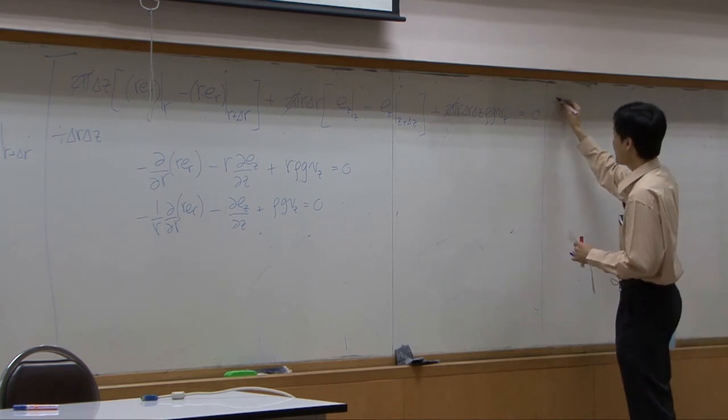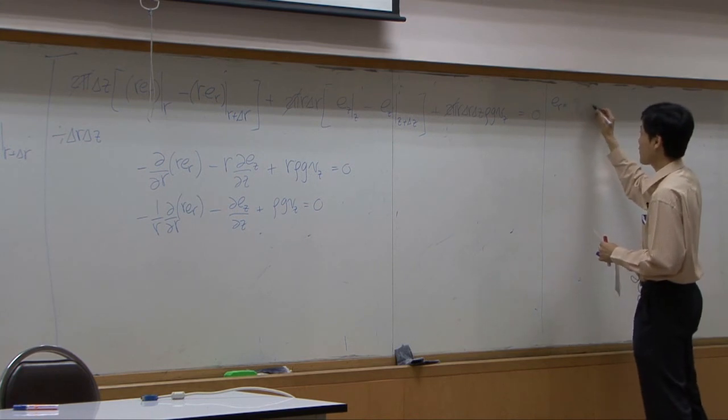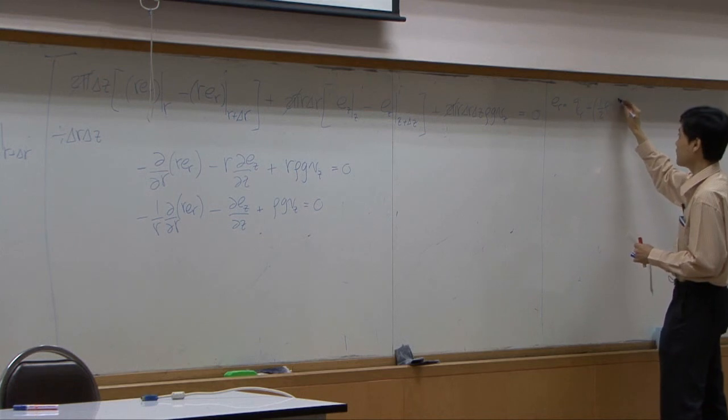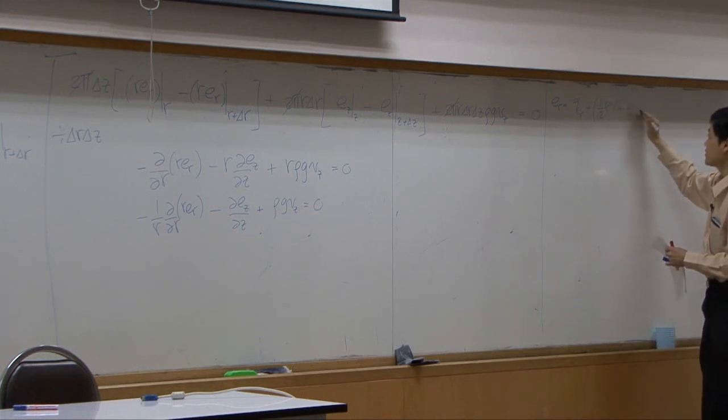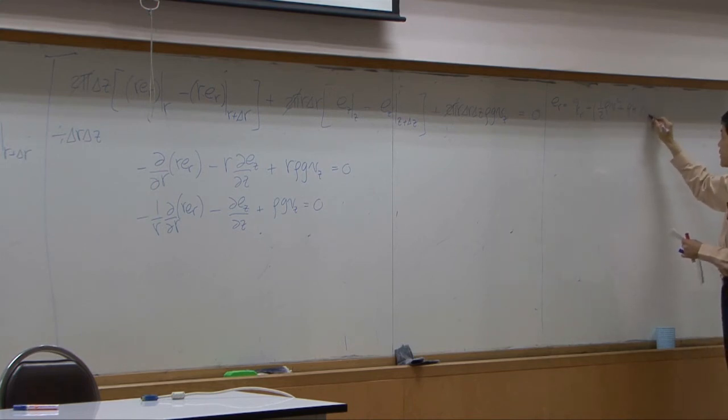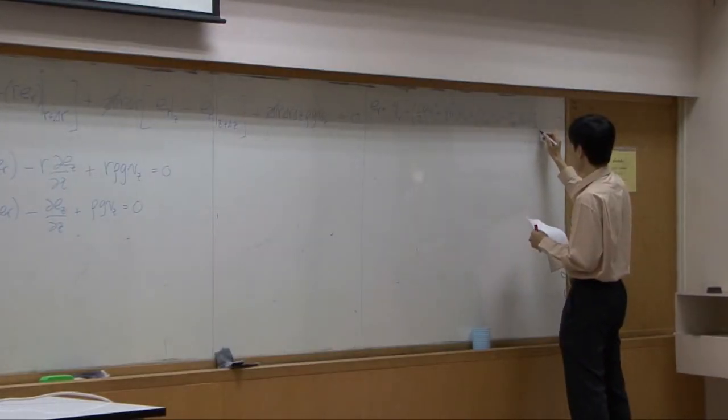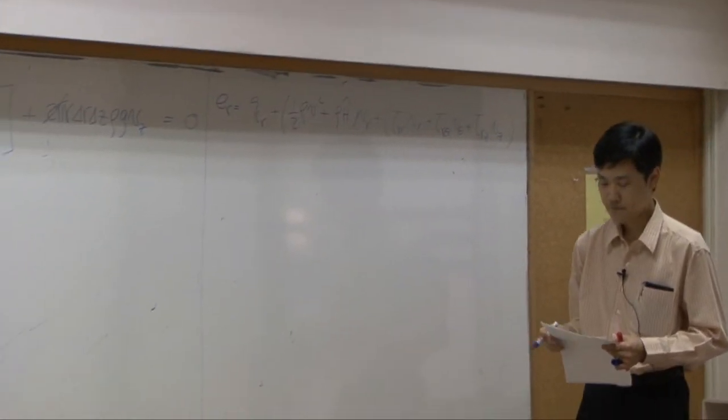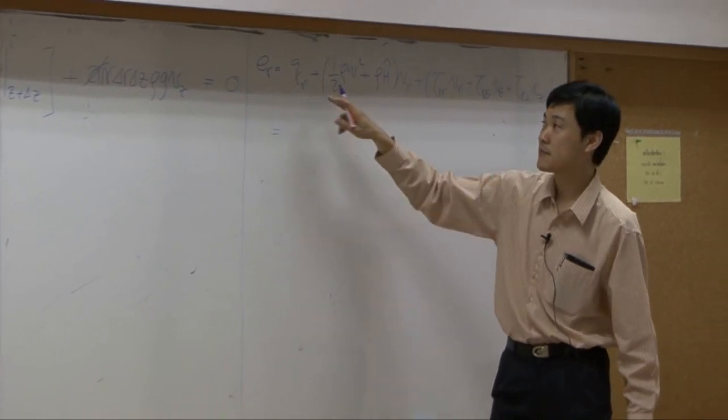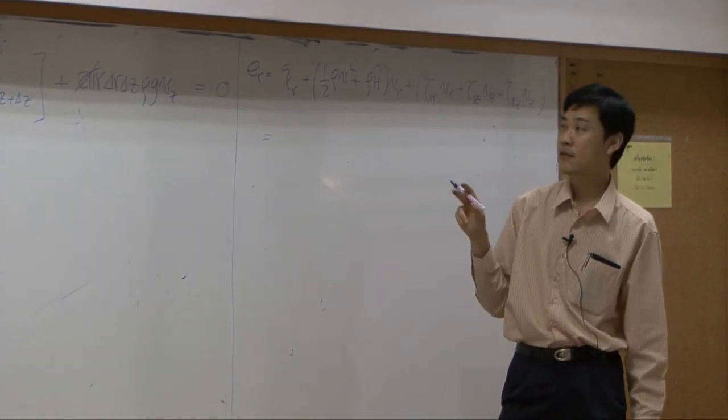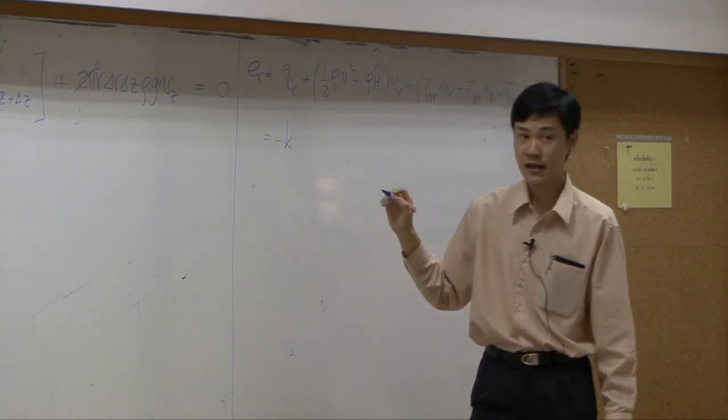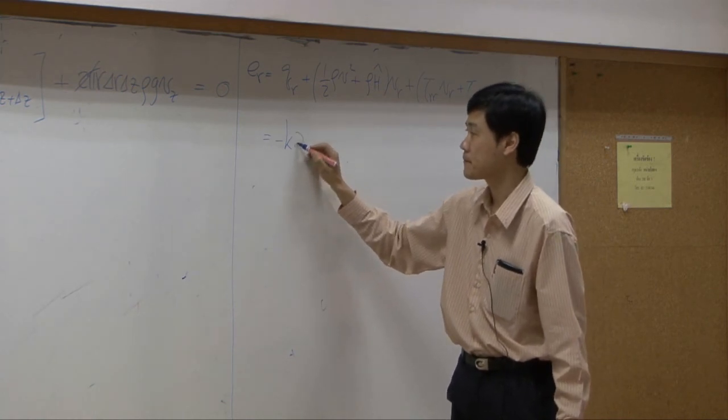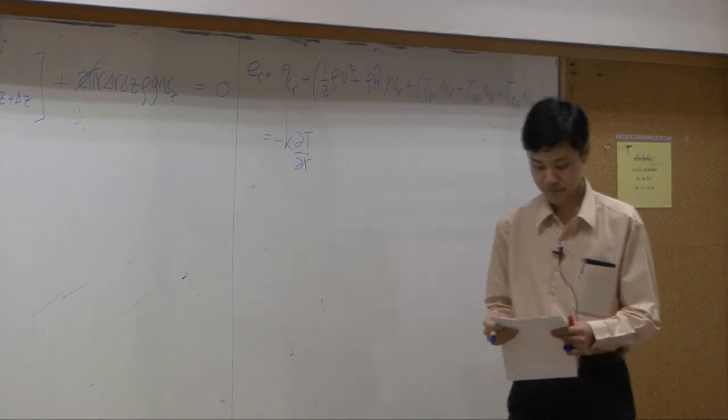Er should equal to q r plus 1 over 2 rho v square plus rho u, I'm sorry, rho h v r. The first term, q r is conductive flux in r direction. That can be represented using Fourier law.